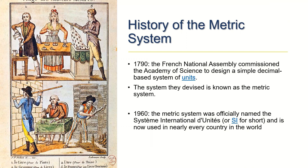By the 18th century, dozens of different units of measurement were commonly used throughout the world. The lack of common standards led to a lot of confusion in trade between countries. At the end of the century, the French government sought to solve this problem. In 1790, the French National Assembly commissioned the Academy of Science to design a simple decimal-based system of units. This system is known as the metric system, and in the 1960s it was officially named the Système International des Unités, or SI for short, and is now used in nearly every country in the world.